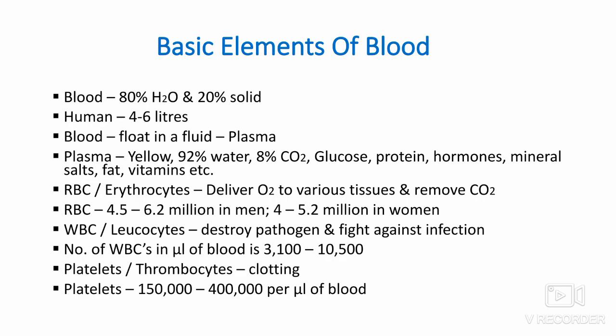Blood possesses various types of cells that float in a fluid called plasma. Plasma is a yellowish fluid with 92% of water, and the remaining 8% includes carbon dioxide, glucose, protein, hormones, mineral salts, fats, vitamins, etc.